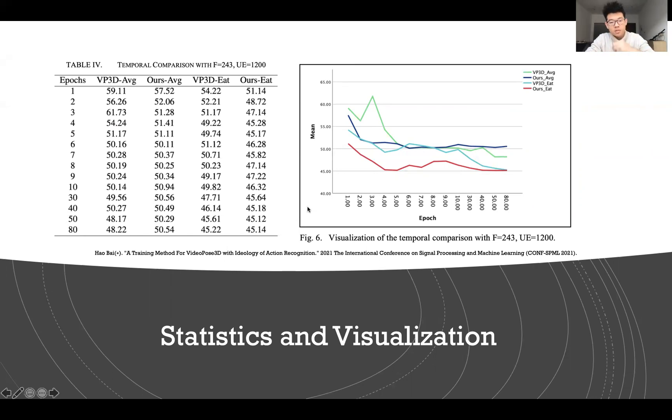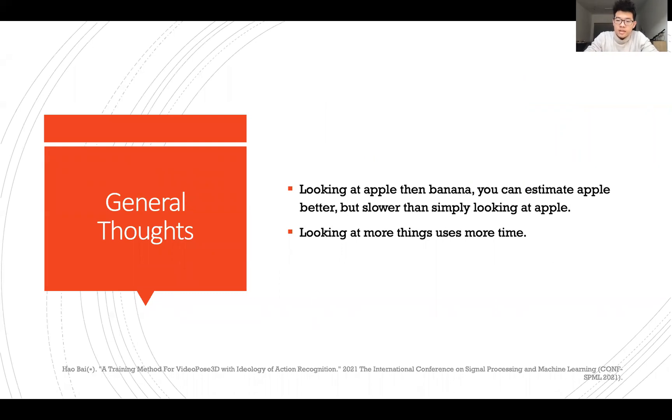This gives rise to some general thoughts. Looking at apple then banana, you can estimate that apple better, but slower than simply looking at apple. It's like if your child is learning something—you give them three types of things, and they can learn the three types all better, but it takes more time. Even if you keep them looking at one thing for three times longer, he can learn that thing well, but he cannot learn anything about the other two. Even though he can learn it better, he cannot learn more precisely because he cannot tell the difference between those things. He cannot identify exactly this thing that you want him to classify.